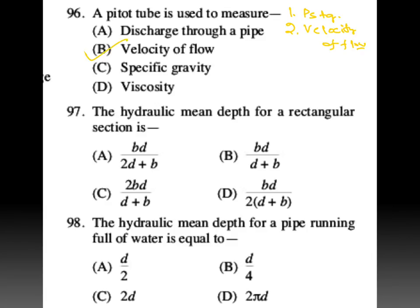Hydraulic mean depth for a rectangular section: hydraulic mean depth M = A/P, area divided by wetted perimeter. For a rectangular section, area = B × D, perimeter = 2(B + D), so M = BD / 2(B + D). From the options, D is your answer.